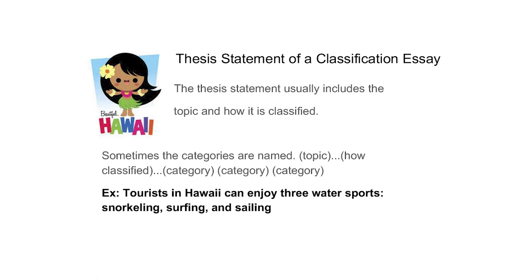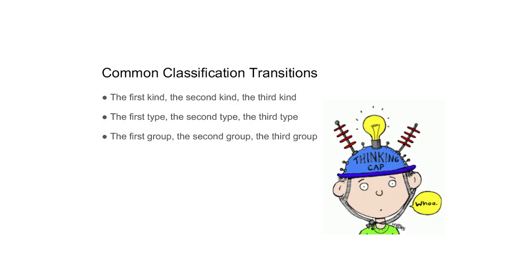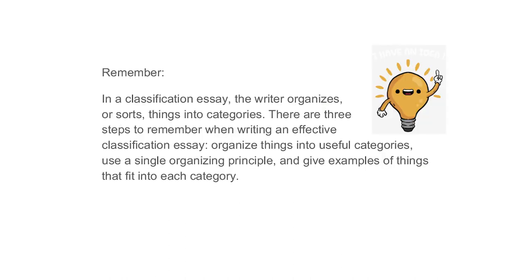For example: 'Tourists in Hawaii can enjoy three water sports: snorkeling, surfing, and sailing.' A question like 'What are some fun things to do in Hawaii?' leads right to that thesis. Then your main body paragraphs would each cover one — snorkeling, surfing, and sailing. This keeps you organized on what to write about. The most important thing in a classification essay is to organize your thoughts.